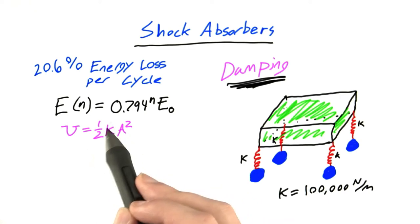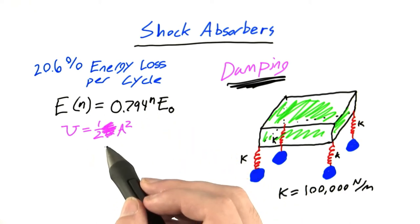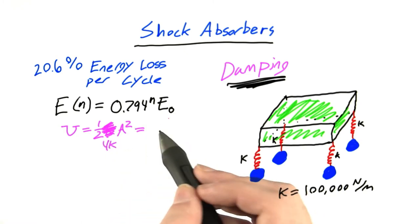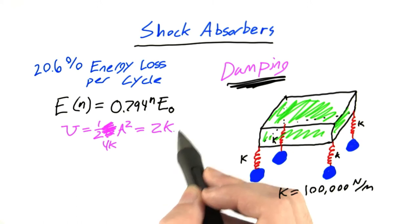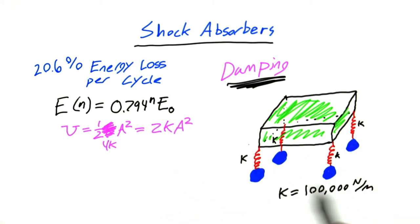Now I should be careful here, the value here should not actually be k, it should be equal to 4k. So this equation should actually be equal to 2kA squared. And that's because we have four springs down here, which can be effectively treated as one spring with a spring constant of 4k, which we saw in the solution to the previous question.